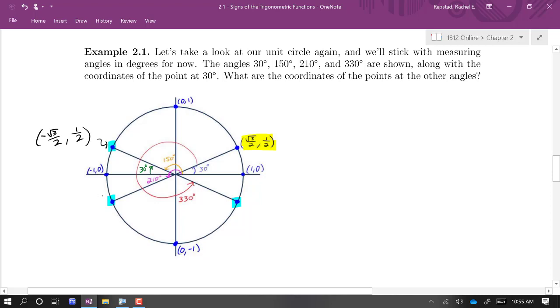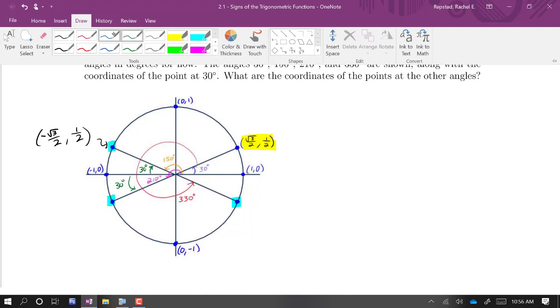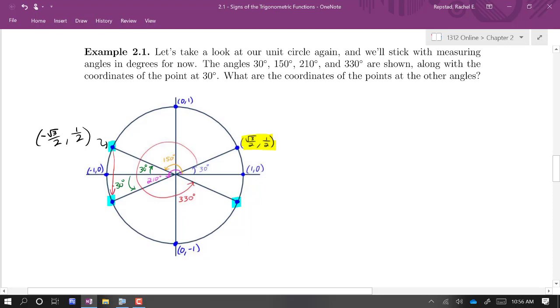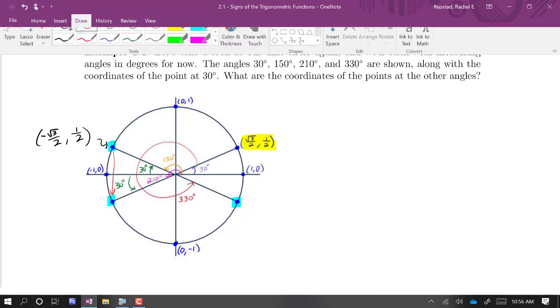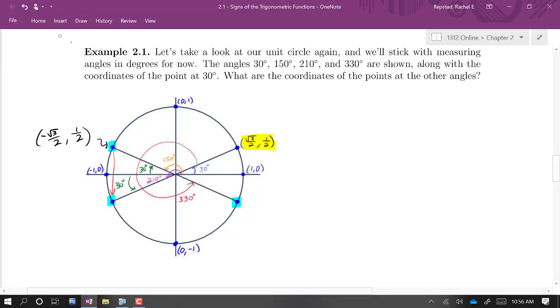If we move down here to the third quadrant, that is the angle 210 degrees. 210 degrees is 30 degrees below the 180, and that is simply a reflection across the x-axis of this point that we just found at 150 degrees. Taking this point and reflecting it down across, it will have the same x coordinate, but it will have the negative y coordinate. The coordinates of this point are negative root 3 over 2, negative 1 half.